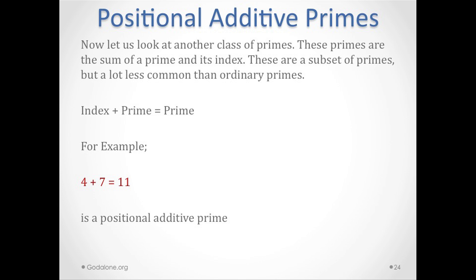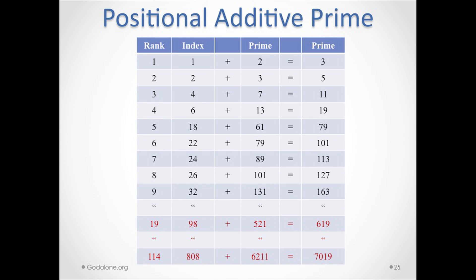Again, we have to tabulate this and write a program to generate these numbers. For example, the 8th such number is 26 plus 101, which is 127. The 19th one is 98 plus a prime equal to 521, and that's 619.